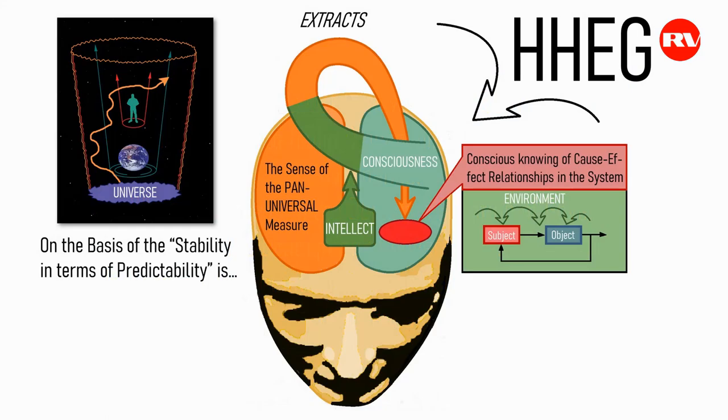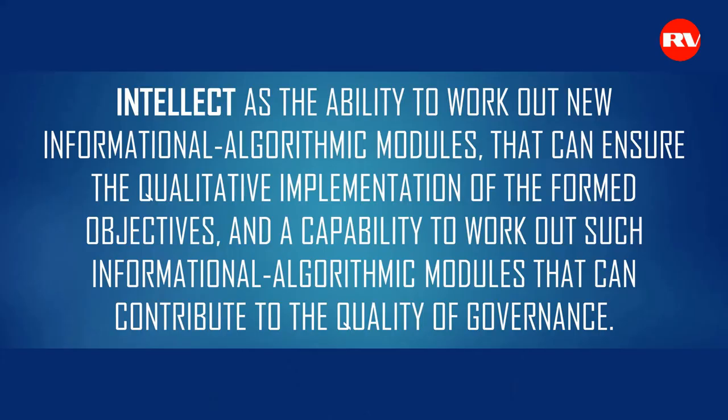Therefore, governance, generally speaking, is a reveal of a personality's intellectual creative potential. This is necessary in order to determine the factors impacting the process of governance, the object and subject of governance. One has to work out and form goals, integrate them into the common vector of goals, work out a conception of governance. Behind all this lies precisely the work of intellect as the ability to work out new informational algorithmic modules that can ensure the qualitative implementation of the formed tasks and goals.